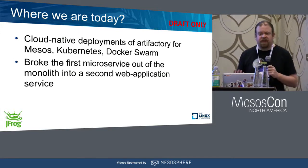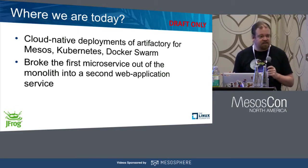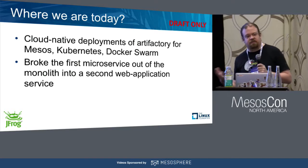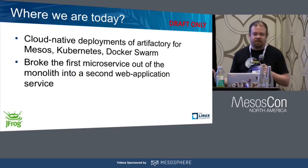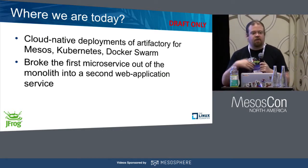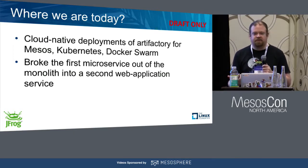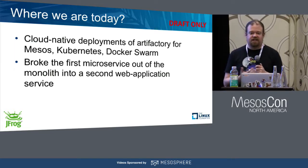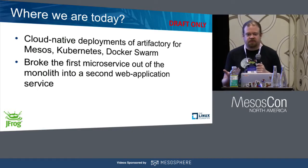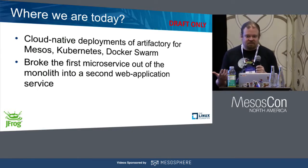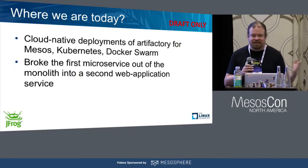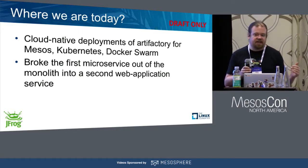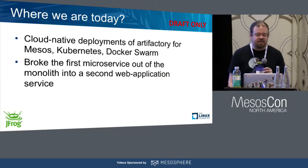We've managed to break the first microservice out of this monolith — JFrog Access, which manages permissions and authentication. We've started breaking the monolith, which was the other big goal with Artifactory 5: not just to become cloud-native, but to set the architectural framework to start breaking the monolith up slowly. It's still not separate containers — it's two war files in the same Tomcat for now. But as our chief architect puts it, it's conceptually completely separate, communicating via REST APIs, even though it's not yet deployment-separate.